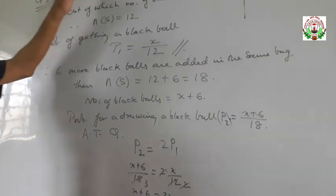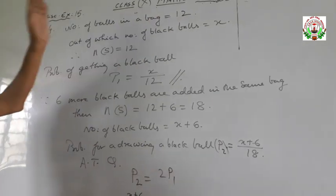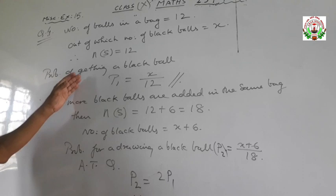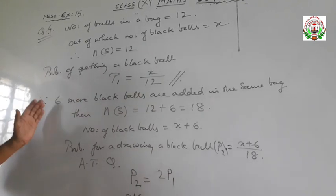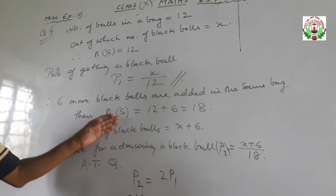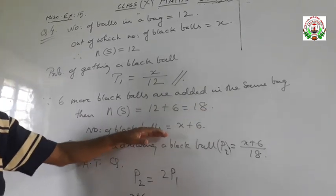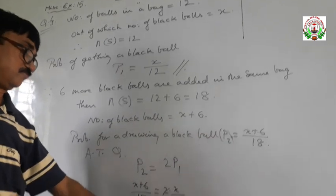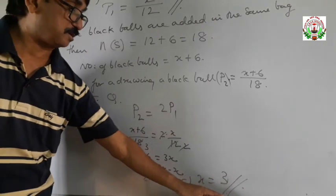To summarize question 4: the number of balls in the bag is 12, out of which X are black, so probability of drawing a black ball is X upon 12. When 6 more black balls are added, total becomes 18 and black balls become X plus 6. Solving the equation gives the answer X equals 3.